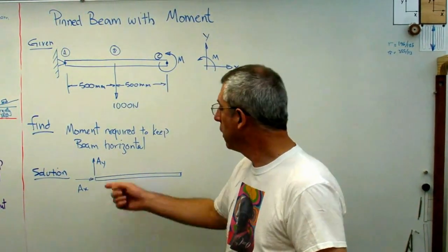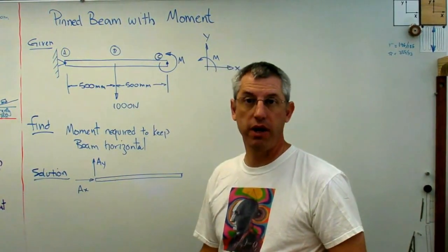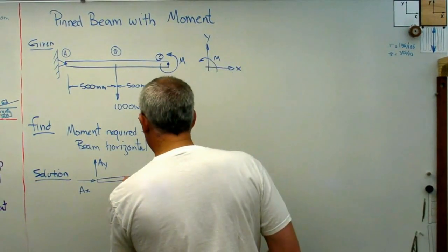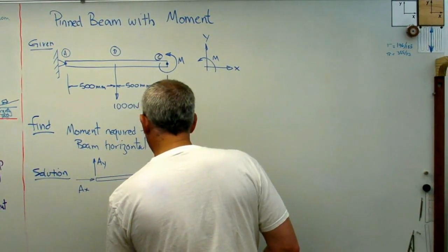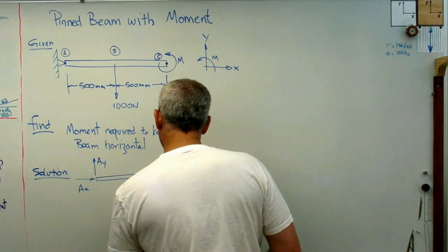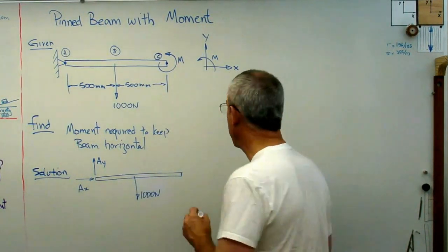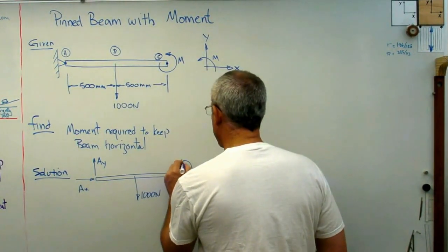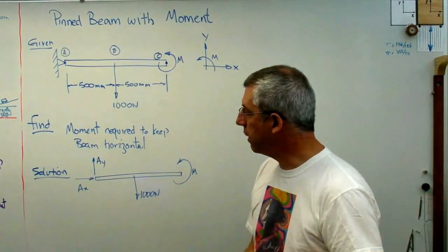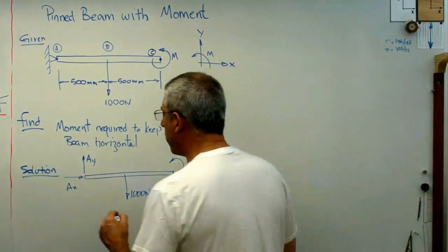If it turns out I'm wrong, then AY and AX will just have a negative sign on them, so that's all right. I've got a thousand newtons here. Make sure I'm still in frame. And I've got this moment here at the other end. Moment about C. That's it. There's the free body diagram.